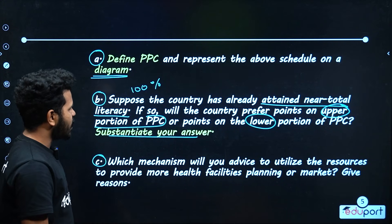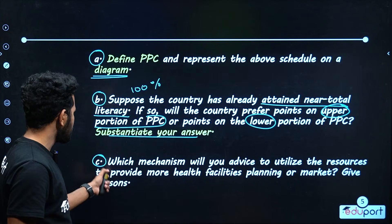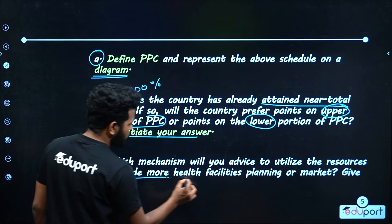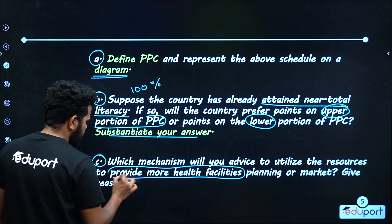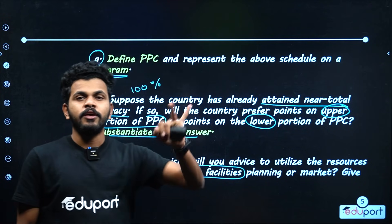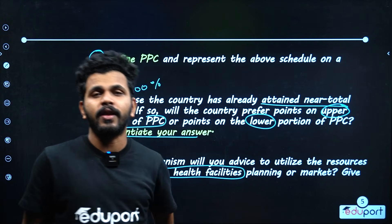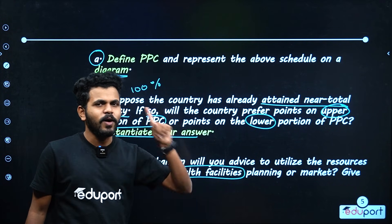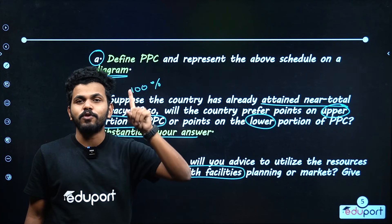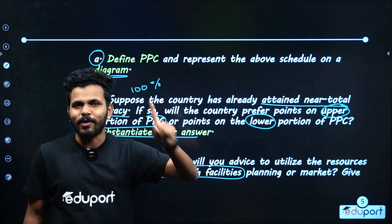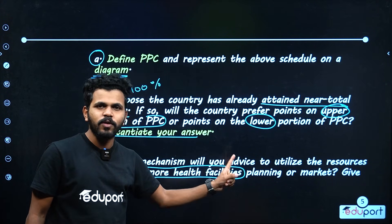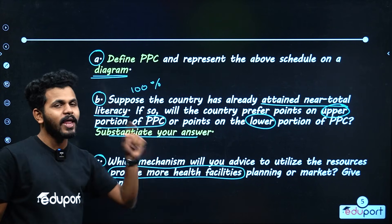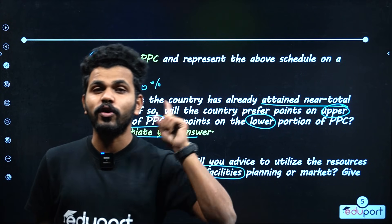Which mechanism will you advise to utilize the resources to provide more health facilities? We have to ask about the balance of health and education. The government should always ask — for this, we have used the types of economies in the post-chapter to provide more health facilities, which is important for the people's welfare.